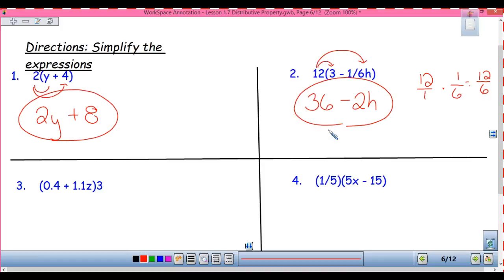All right, let's see you guys. One of the harder ones. One with multiple factors. 3 times 0.4 gives us 1.2 plus, Lauren, what am I multiplying now? 3 times 1.1z gives us 3.3z. Good. 3.3z.